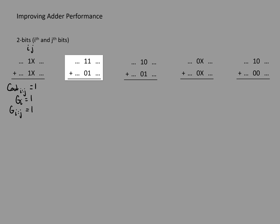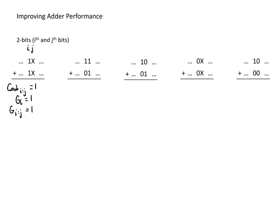In the next case, one input has a one in both positions and the other has a zero in the most significant and a one in the least significant. One plus one will definitely produce a carry, so we'd definitely have a carry out — the carry out for this range is also one. The i-th position was propagating (single one), and the j-th position was generating (both one), so as a whole, the range i through j is definitely going to produce a carry out.